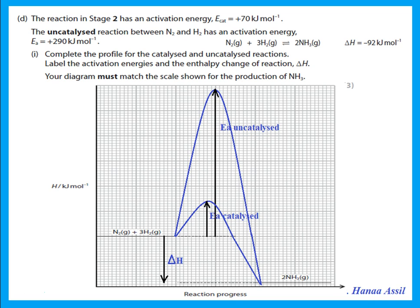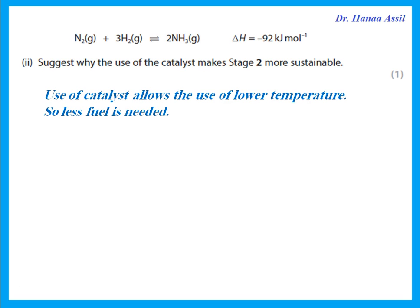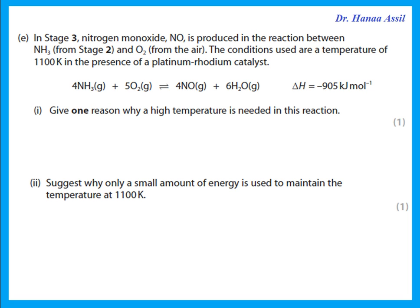The use of a catalyst makes stage 2 more sustainable because a lower temperature can be used, meaning less fuel is needed. In stage 3, nitrogen monoxide is produced from ammonia and oxygen at high temperature in the presence of a catalyst. A high temperature is needed to increase the rate of reaction. Although the reaction is exothermic, a high temperature is still required for sufficient reaction rate.